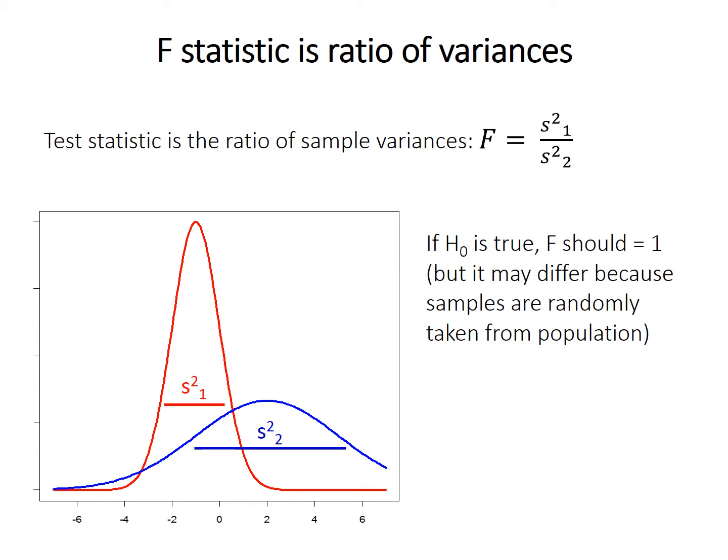If the null hypothesis is true, this means that the two populations have the same variance. Therefore, the F-statistic is most likely to equal 1. But of course, it might differ slightly from 1, because the two samples are randomly taken from the population.